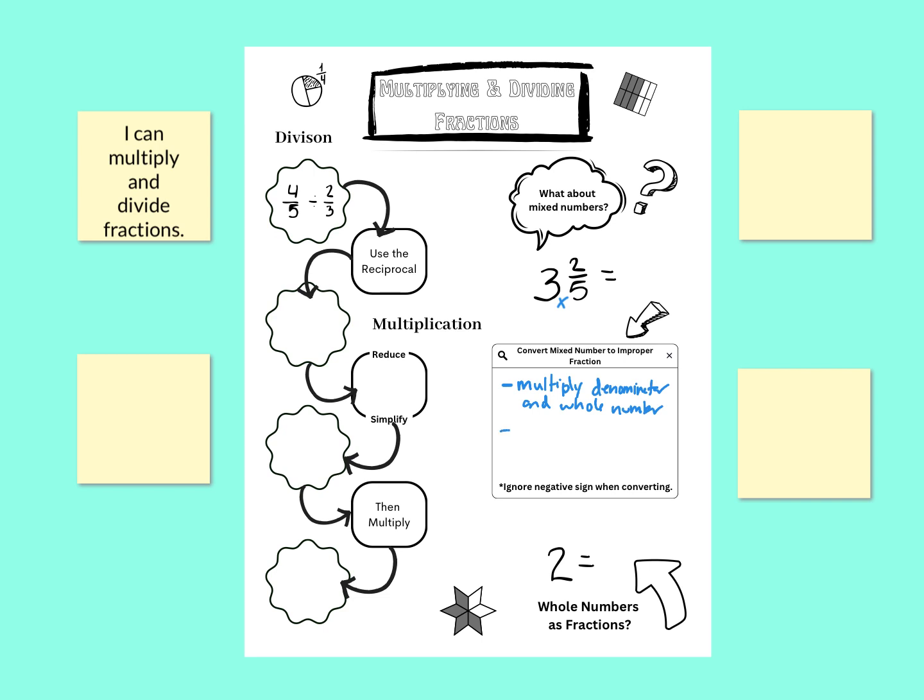And then to that 15, we're going to add the numerator. So we had that 15 in our head, and we're going to add the numerator. So 15 plus 2 more makes 17. That's going to become our new numerator. And we're going to keep the same denominator of 5.